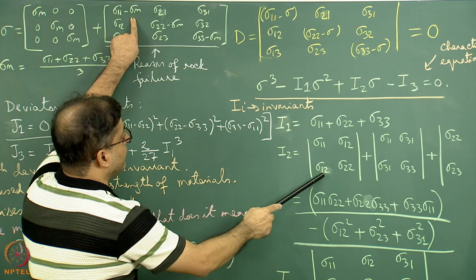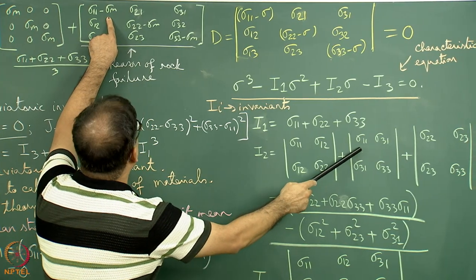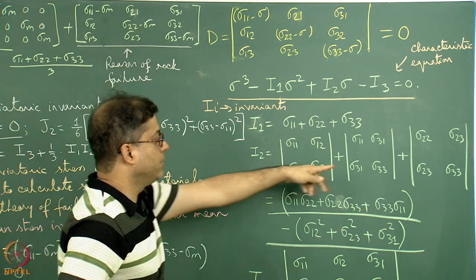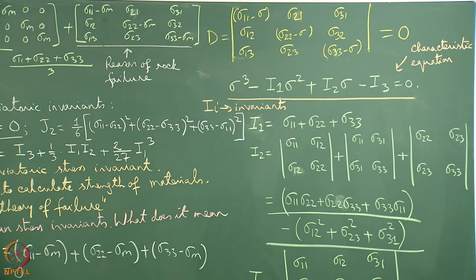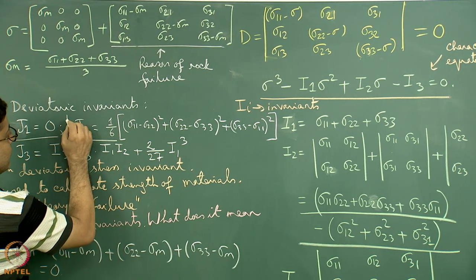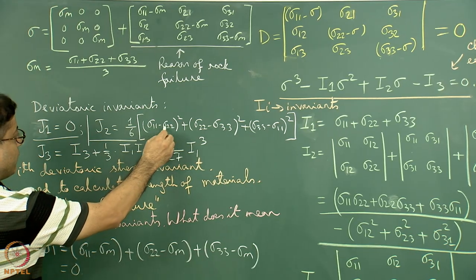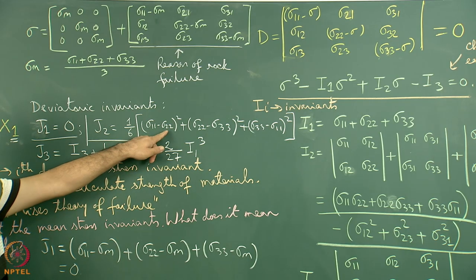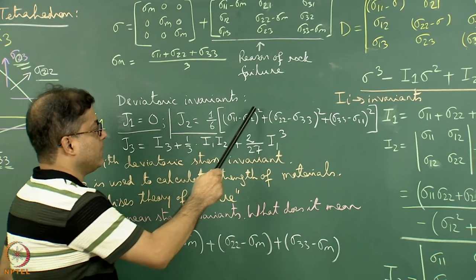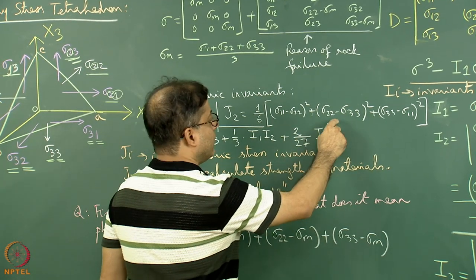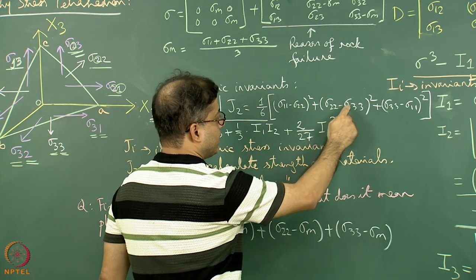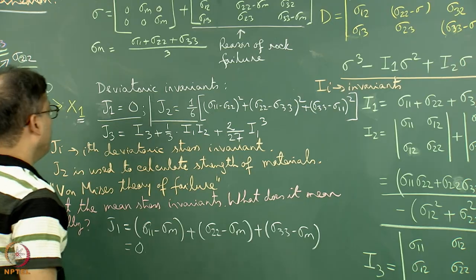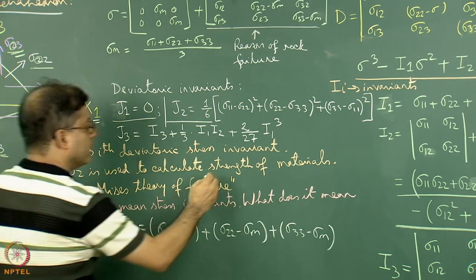Sigma 12 remains the same, and likewise for sigma 31. Here sigma 22 and sigma 33 will be replaced accordingly. Once that is done and simplification is made, we find out that j2 — which is very important — is equal to one-sixth multiplied by the quantity: sigma 11 minus sigma 22 whole squared, plus sigma 22 minus sigma 33 whole squared, plus sigma 33 minus sigma 11 whole squared. The signs do not matter because we subtract and square, so the same result comes out regardless of which is larger.